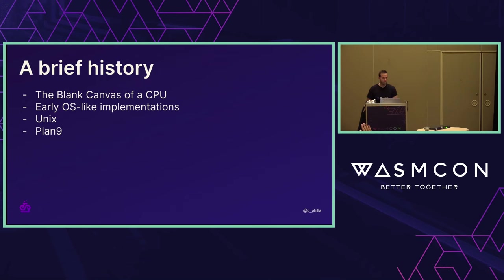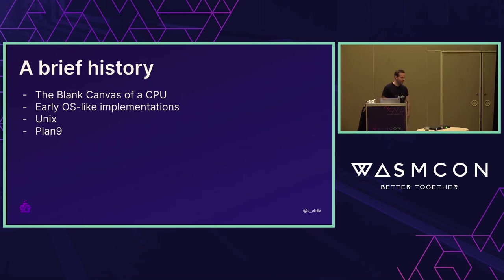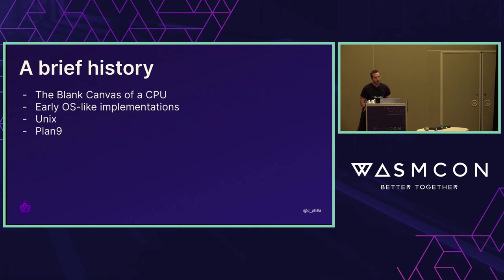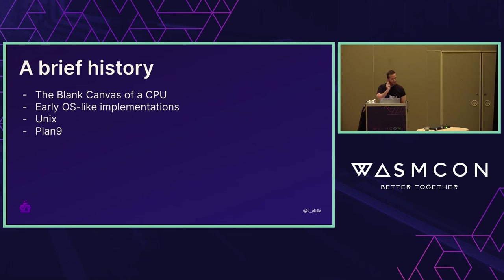We'll talk about Unix and what it left to be desired, and what the same group of people tried to rectify with something called Plan 9. Plan 9 came from Bell Labs — probably the result of a feeling many of us are familiar with: you look back at what you released and say, 'I wish I could have done these things differently.' Plan 9 has also influenced some design choices around WebAssembly, and specifically WASI, which is pretty cool.